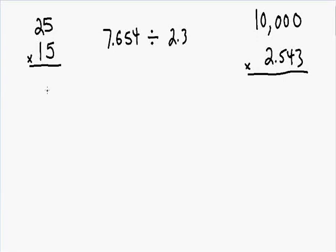Welcome to my video on multiplying and dividing using significant figures. Let's say we multiply the numbers 25 times 15 and we plug this into our calculator and our calculator gives us an answer of 375.